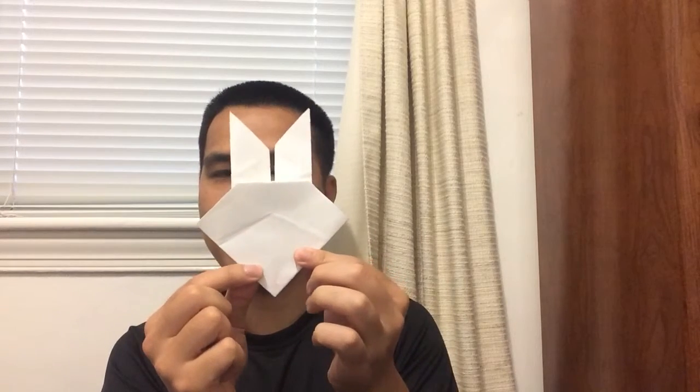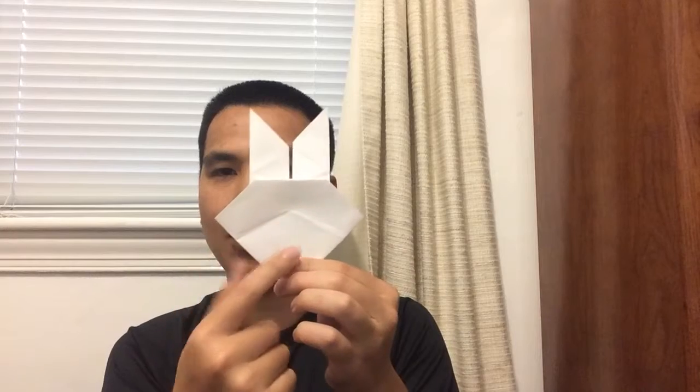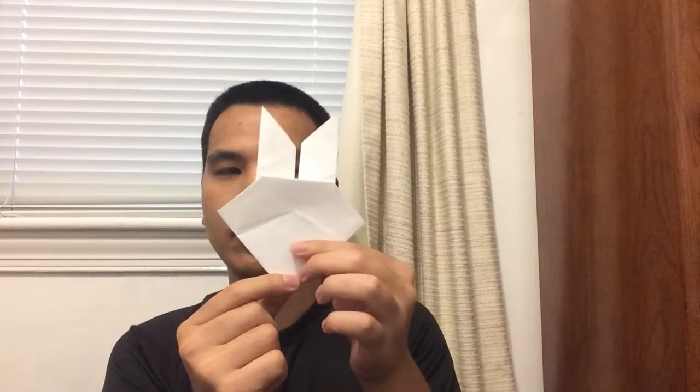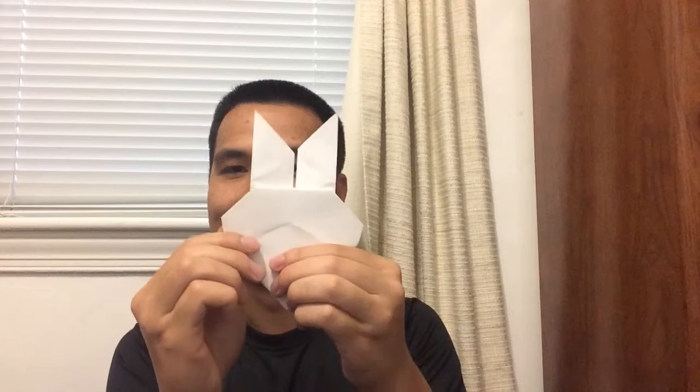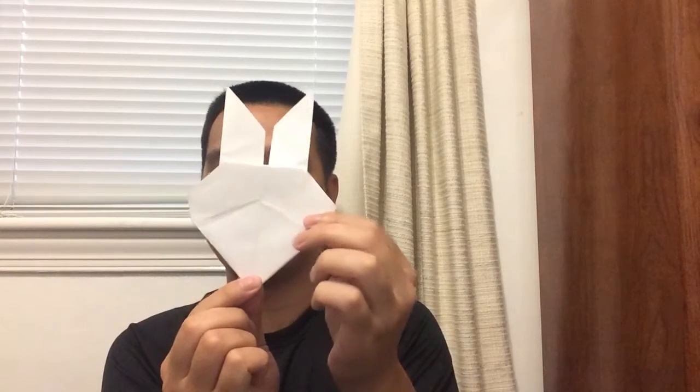And you can draw the eyes, the nose, and the mouth if you want. You can also fold in these edges if you want, the side edges right here. You can fold it in just a little bit if you don't want your rabbit to look like a carrot.